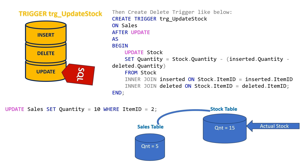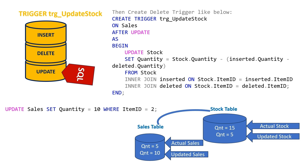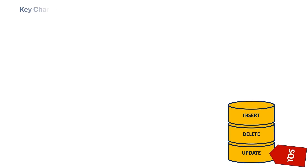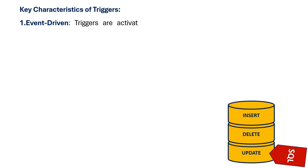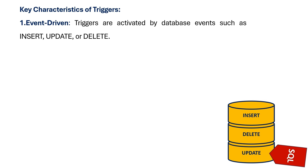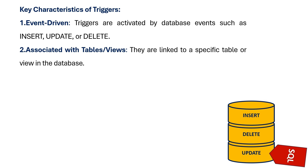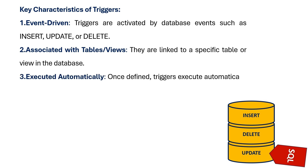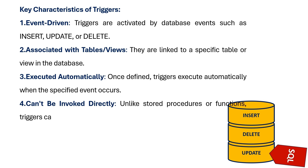Key characteristics of triggers: First, event — triggers are activated by database events such as insert, update, or delete. Second, associated with tables and views — they are linked to specific tables or views in the database. Third, executed automatically — once defined, triggers execute automatically when the specified event occurs. Fourth, cannot be invoked directly — unlike stored procedures or functions, triggers cannot be called or executed directly.